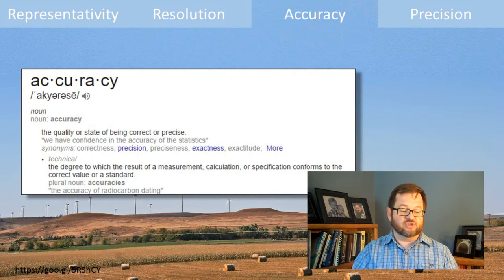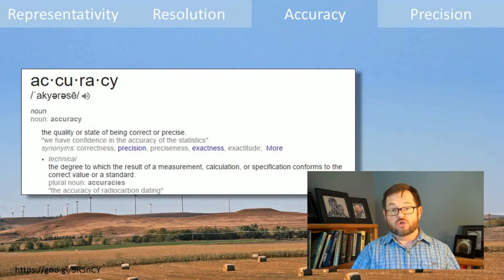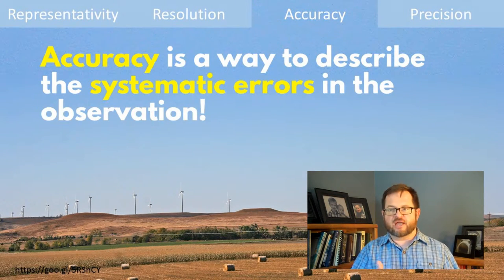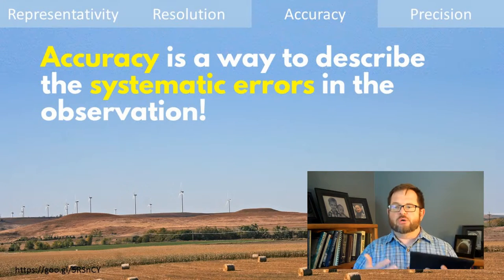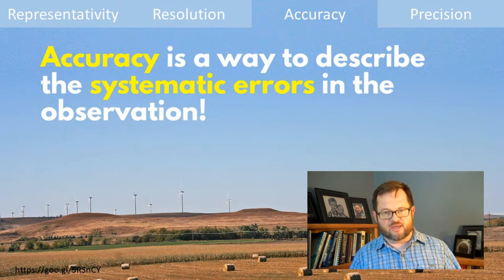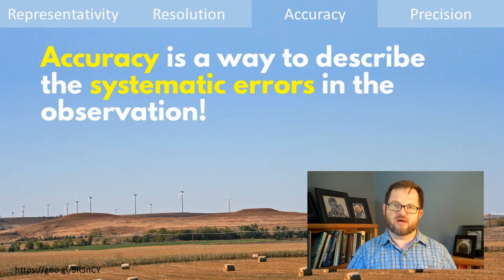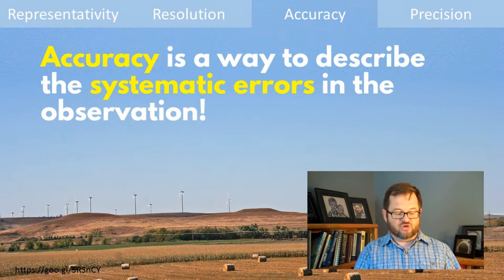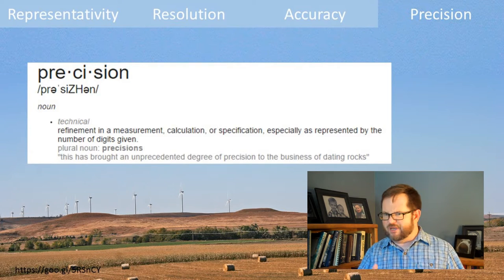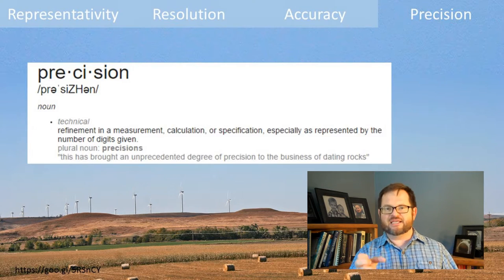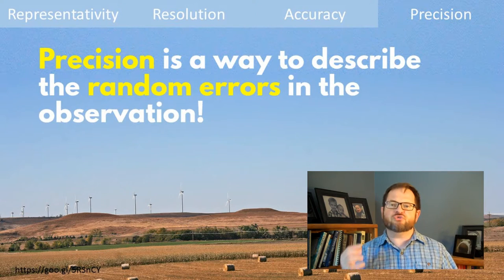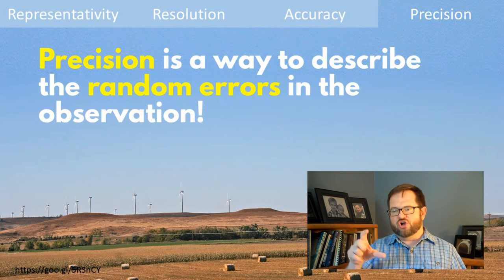Accuracy is about the degree to which a result, calculation, or specification conforms to the correct value — we're looking for systematic errors, like a calibration problem where the anemometer always tells us the winds are 2.3 meters per second lower than they really are. There's some kind of problem with the anemometer, or the thermometer, or the barometer, or whatever weather instrument you're looking at. That is a different problem than precision.